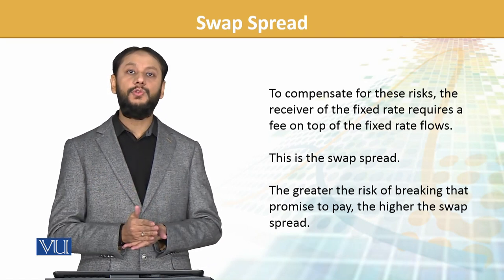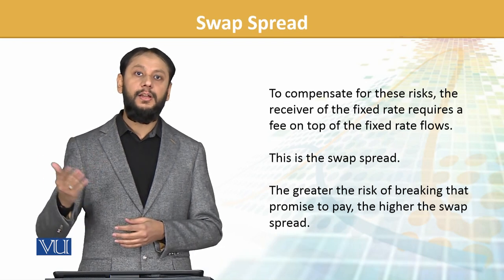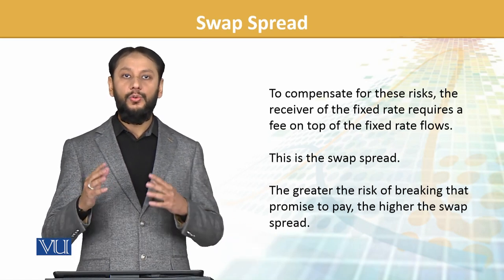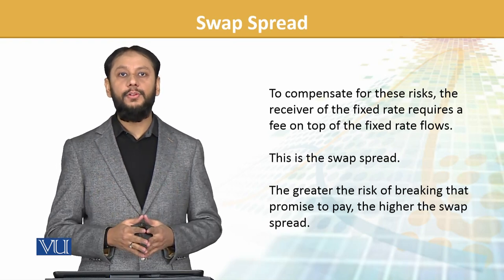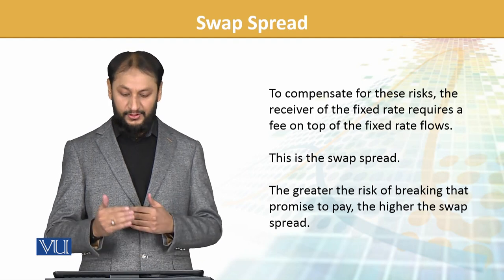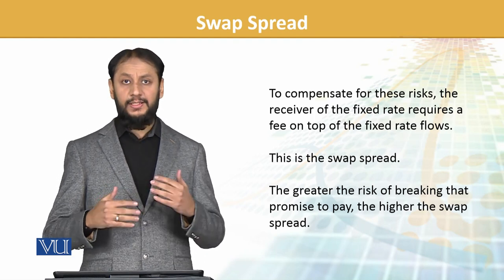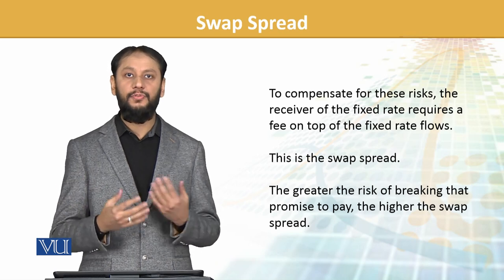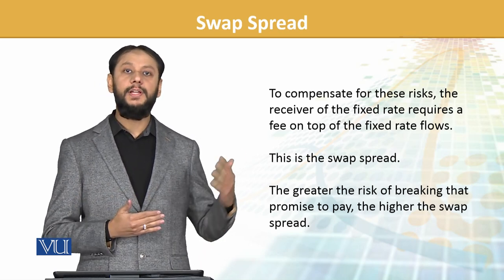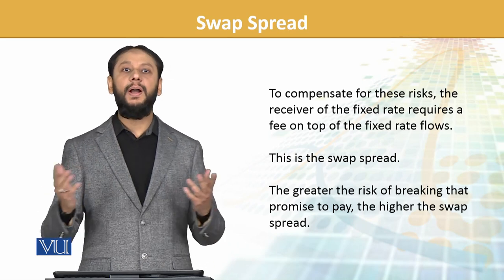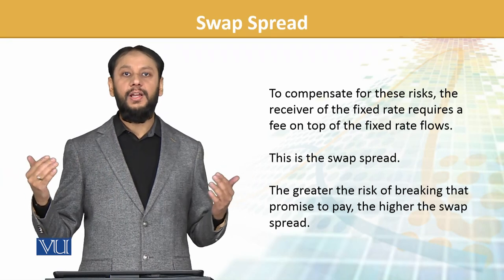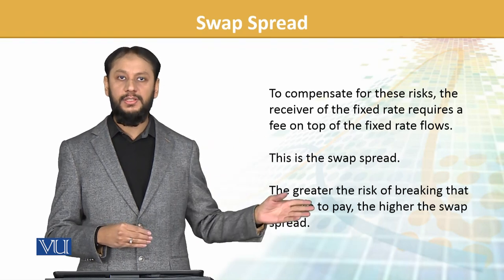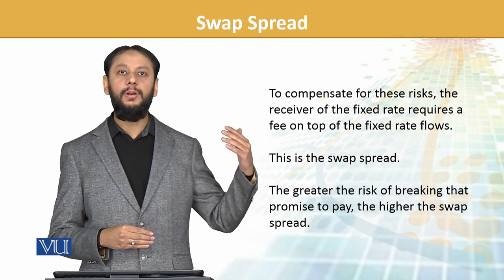If the other party defaults, we go back to floating rates. That default risk is being captured in the swap rate spread. The greater the risk of breaking that promise — यानि कि अगर दूसरी party renowned नहीं है या उसकी defaults की history है — तो swap spread भी ज़्यादा होगा. जितनी अच्छी party होगी, जैसे Nishat Mills या Sapphire, swap rate कम होगा, लेकिन अगर कोई vulnerable company है तो swap spread बढ़ जाएगा.